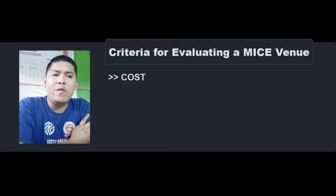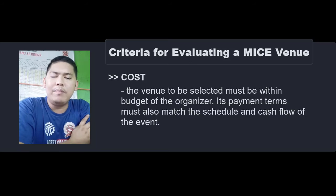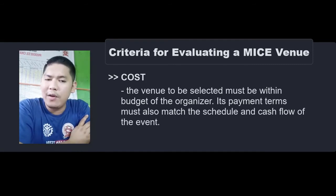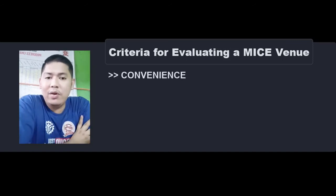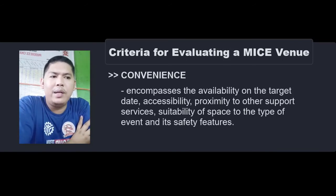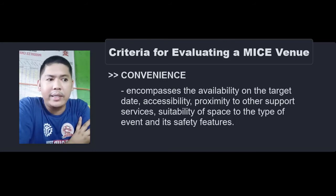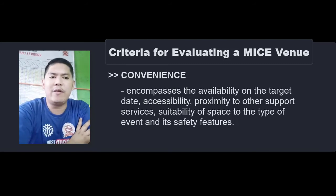Number two is Convenience. Convenience encompasses the availability of the target date, accessibility, proximity, and other support services like suitability of space for the type of event and its safety features. It is an important factor to consider when selecting the event venue.